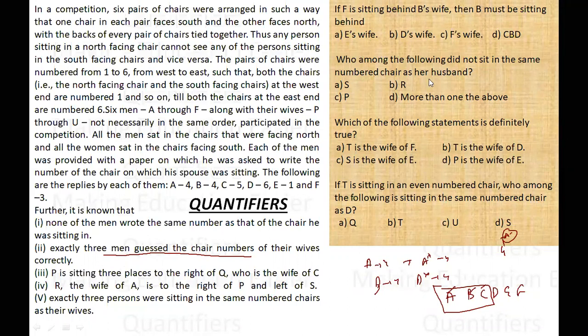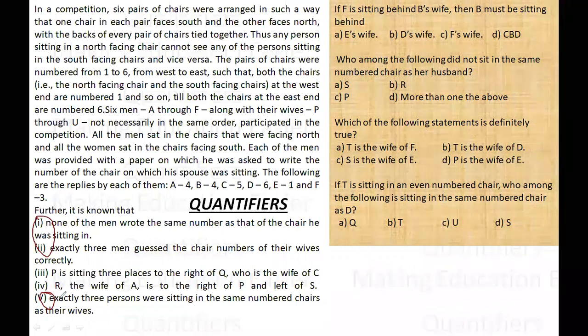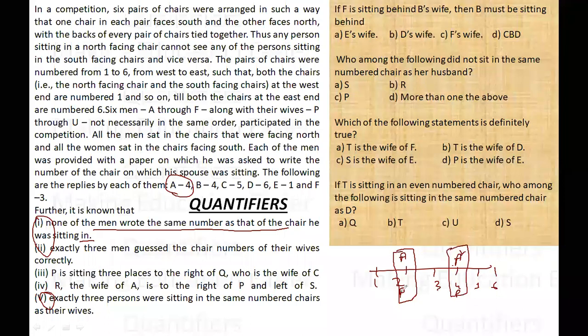Exactly three people were sitting in the same number chair as their wife. Now this is a very interesting point. There are three such people who are sitting in the same number as their wives. This means that none of the men wrote the number in which he was sitting in. If A's wife is on fourth position and A is also sitting there, then A's estimate that his wife is sitting on fourth position is wrong.